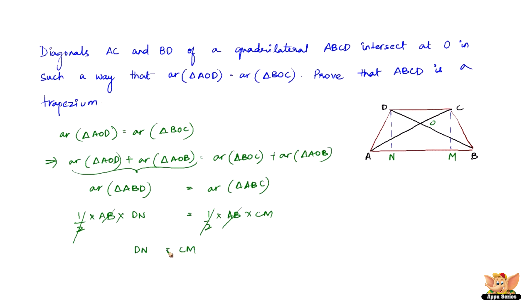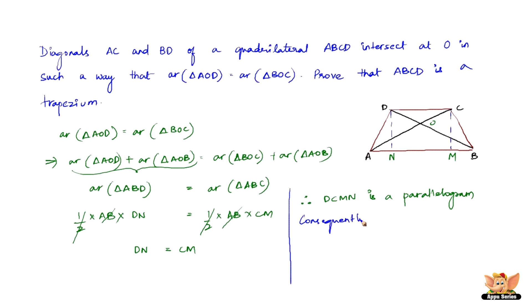Since DN equals CM and DN is parallel to CM — as both are perpendicular to AB — DCMN is basically a parallelogram. As a result, DC is also parallel to AB, and hence ABCD is a trapezium.